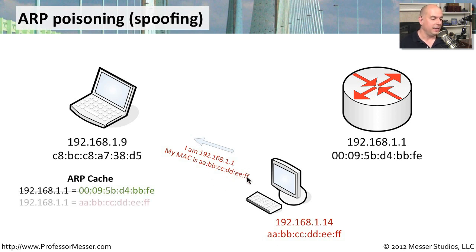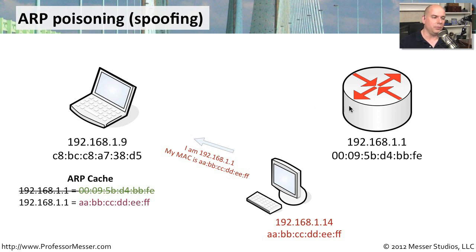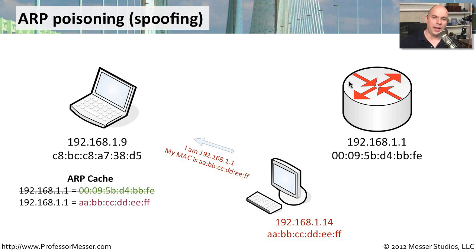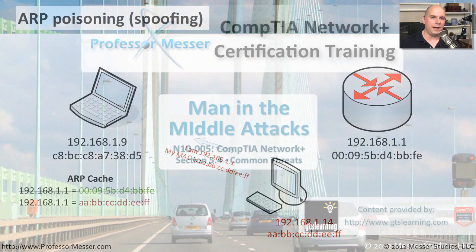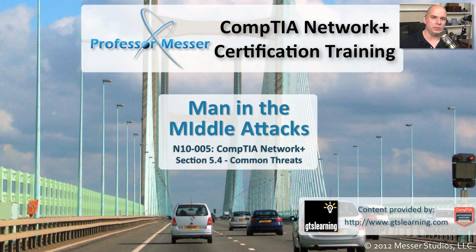When the workstation sees that, it says: you've changed — I'll go ahead and update my ARP cache. Now all the traffic that would normally go to the router is instead sent directly to 1.14. The bad guy then performs the same ARP poisoning toward the router on the other side. Now the ARP spoofing is complete: the bad guy has told the laptop he's the router, and told the router he's the laptop — so all traffic flows through him, and he can view everything going back and forth between those two devices.